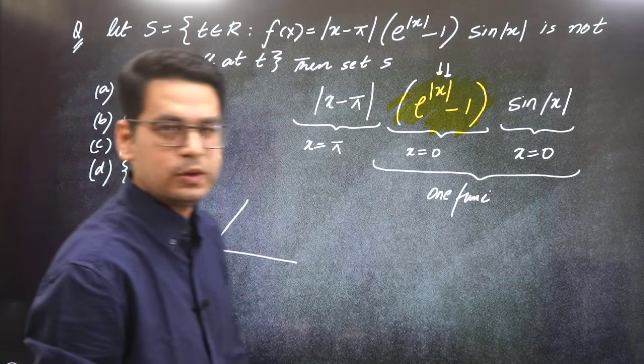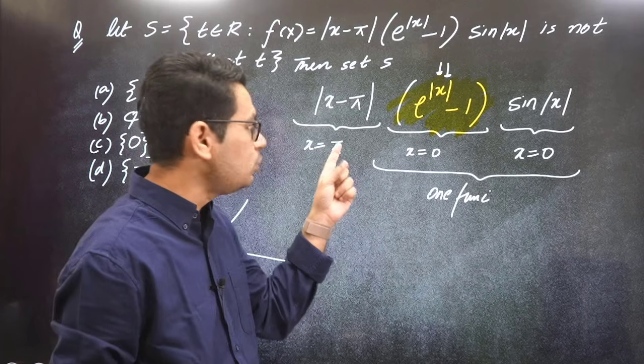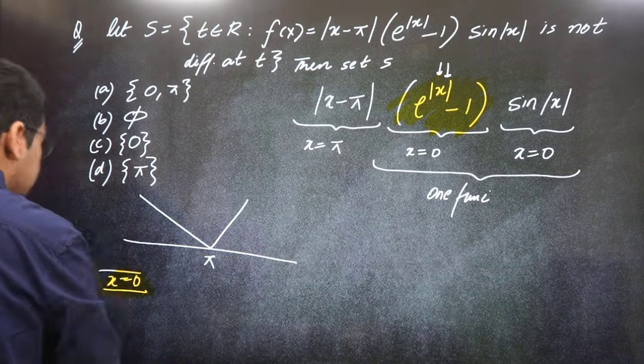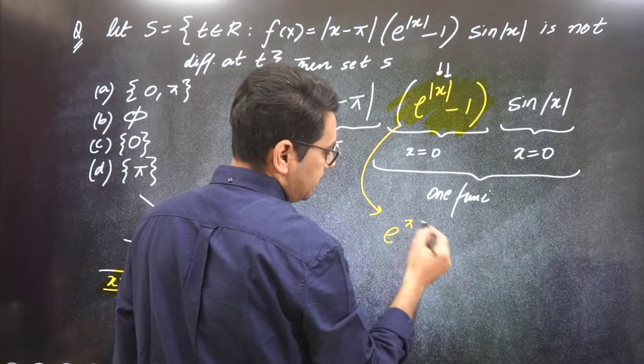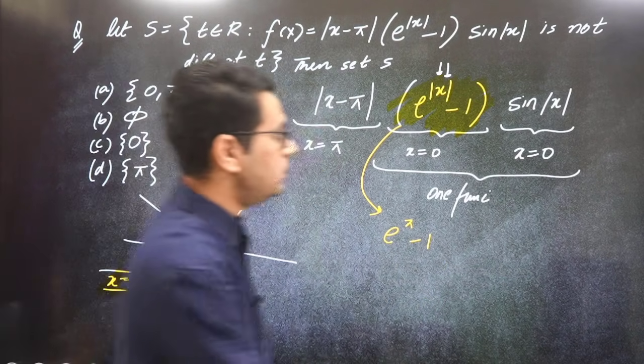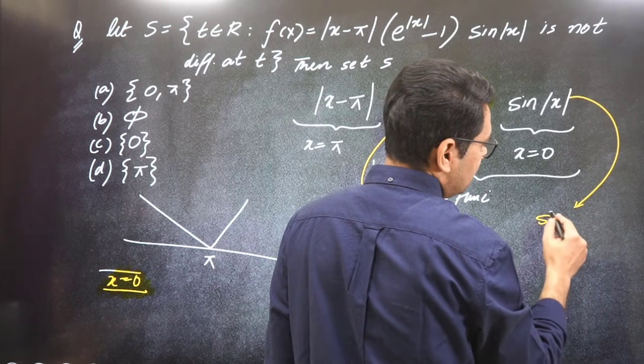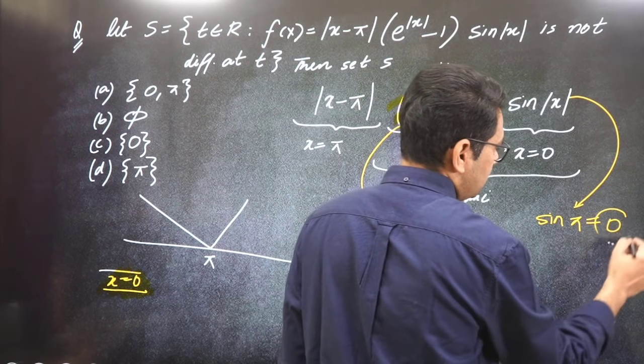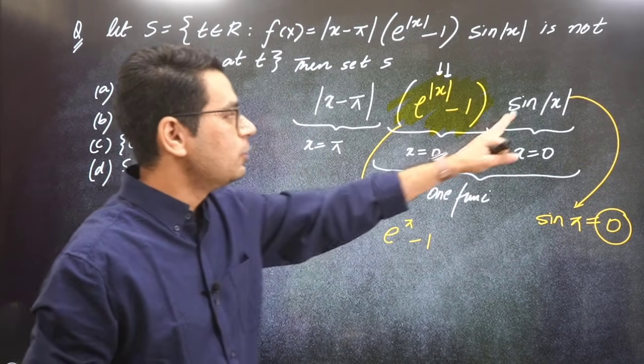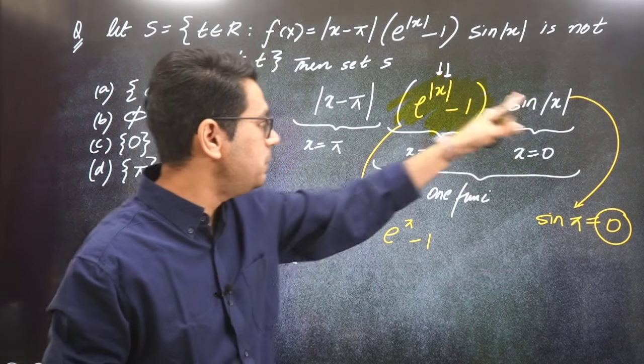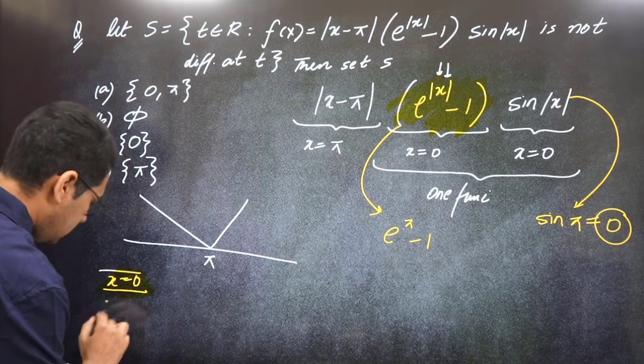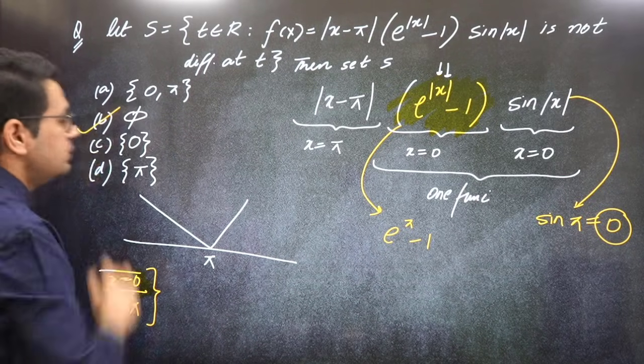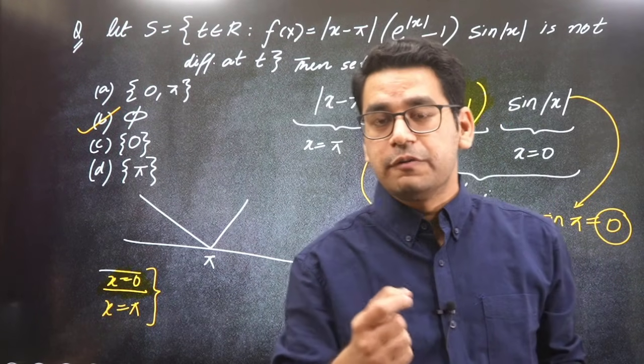At x equals π, this graph is non-differentiable. At x equals π, what is this function? e raised to mod(π-π) - this is non-zero, yes, but what happens here? Sin π is zero. That means at π also the other function is zero. Whichever of the two becomes zero - at x equals 0 also one of these two is zero. That means x equals 0 and x equals π, both graphs are differentiable. The answer is null set, empty set. There is no point where this graph will be non-differentiable. It is differentiable throughout.